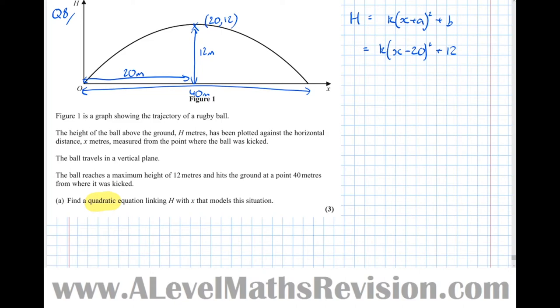But now we need to find the value of k. Well we've got another point we can use. Another two points in fact. We've got this one here or the origin. So we sub in whatever we think is going to be easiest. Well this one here had coordinates 40, 0 and that one's the origin.